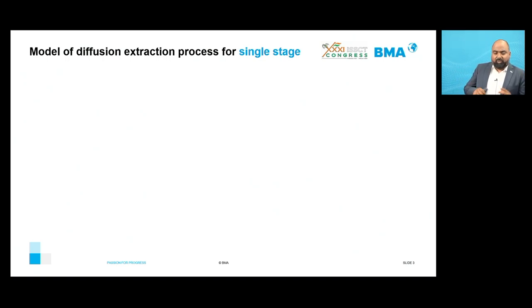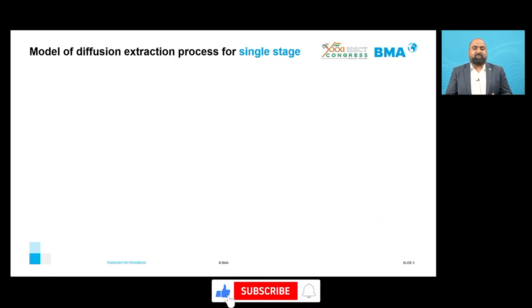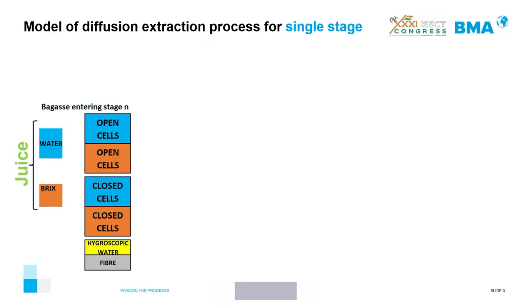The model of the diffuser extraction process for the whole diffuser includes a model for a single stage, and then using mass balance equations the constituents of juice and bagasse are transferred from one stage to the next. The bagasse entering stage N comprises a soluble component — which is juice — and an insoluble component, which is the fiber. Fiber and hygroscopic water do not take part in the extraction process. Within the soluble component we have water and dissolved solids, which is brix. The juice in the bagasse entering stage N is available in both open cells and closed cells.